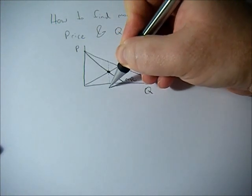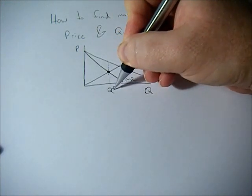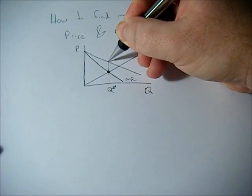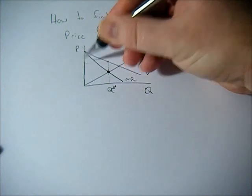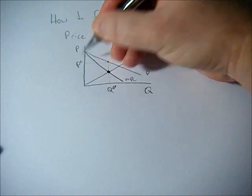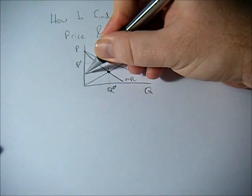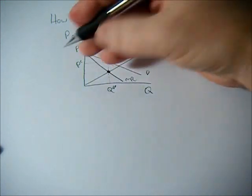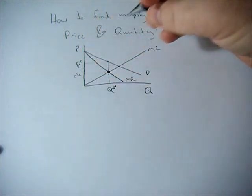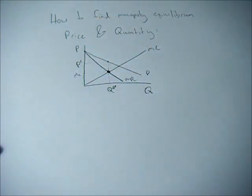So when we draw that line down we're going to get equilibrium quantity, and when we draw the line up to where it intersects the demand curve it's going to give us the price charged to the consumer. And this is going to be the marginal cost of the good to the monopolist.